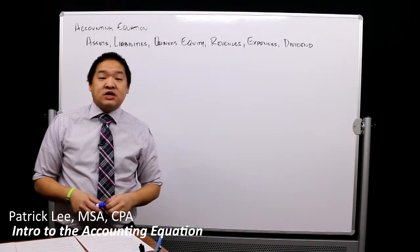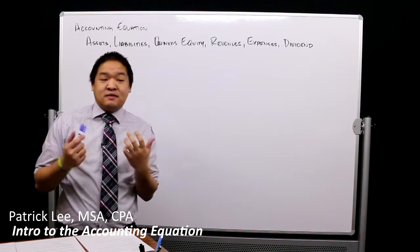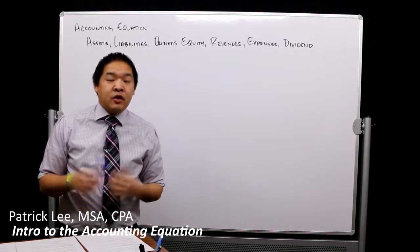We have all these transactions—we buy a piece of equipment—and then what? How do we book that into our books?